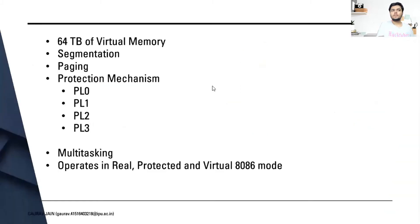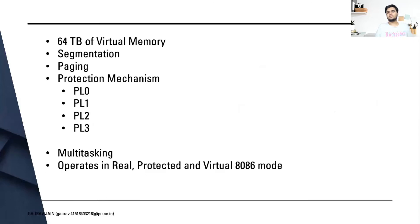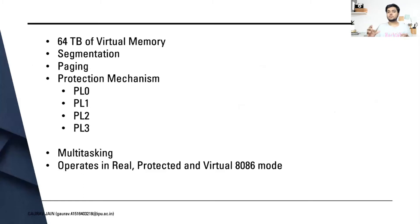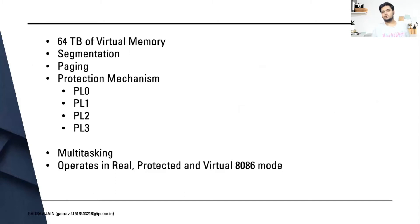A key advancement in the I386 processor was 64 terabytes of virtual memory. I repeat — 64 terabytes. At that time, in the mid-80s, having even one or two GB of hard drive was very difficult. Intel came up with this processor featuring 64 terabytes of virtual memory, which could be implemented using secondary storage.